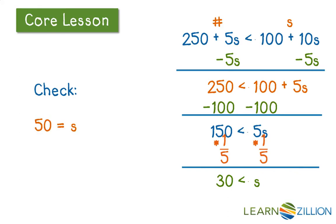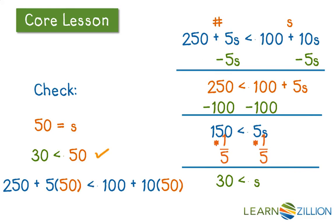Let's check our answer. 50 = s because that's a number bigger than 30. Then let's check it in our original inequality: 250 + 5 times 50 is less than 100 + 10 times 50. That is a true inequality, so we know that's our correct answer. It makes sense in our word problem.